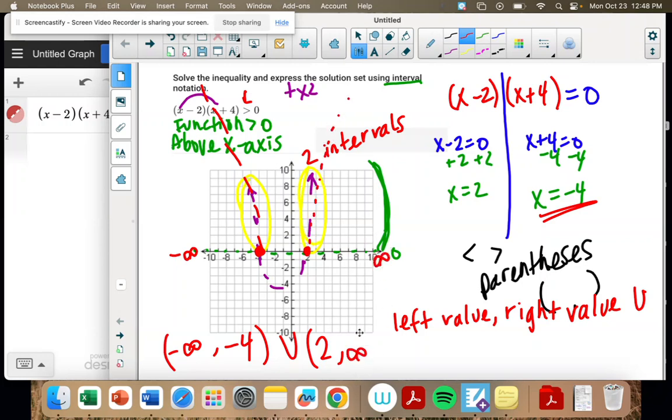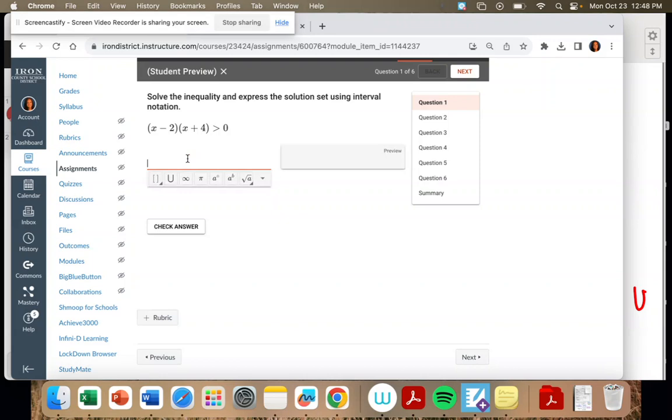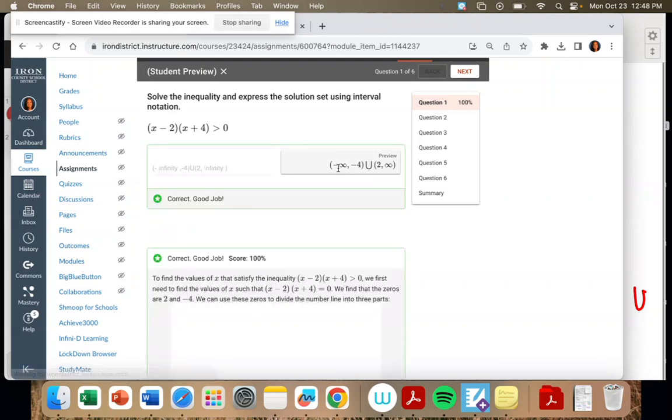To infinity. So remember, these are intervals. They're not points. We're looking at the graph. So the most left it goes is negative infinity. It stops at negative 4. And it picks back up at 2 and goes to infinity. And these are x values that we're looking at.